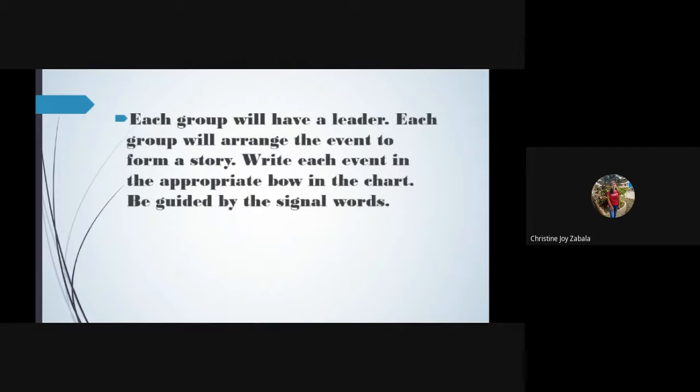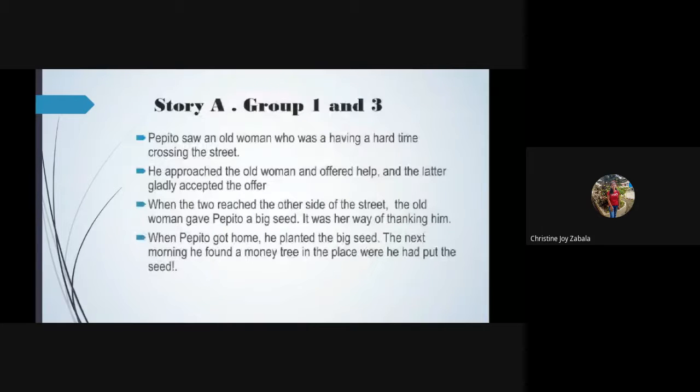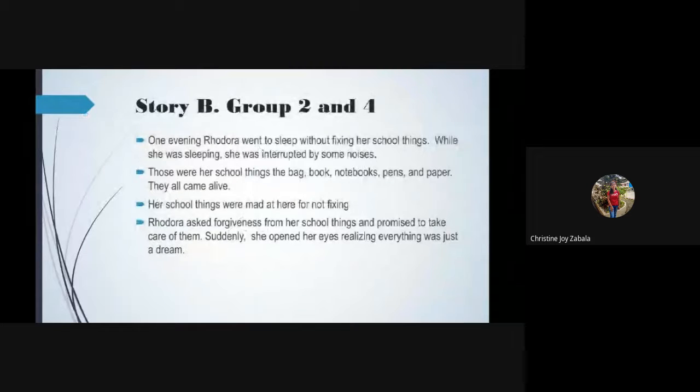I'll give you 15 minutes to answer and you need to read it in the front. Each group will have a leader. Each group will arrange the events to form a story. Write each event in the appropriate box in the chart. Be guided by the signal words. Story A is for group one and group three. Story B is for group two and four.